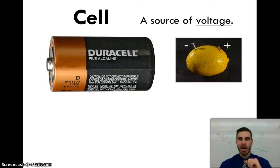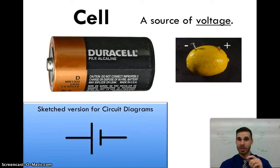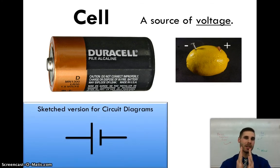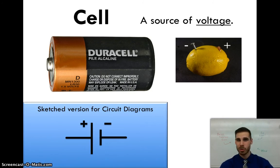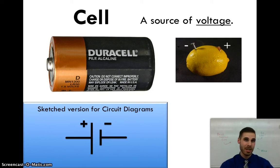How are we going to draw a cell in our circuit diagrams? It's going to look like a line that is interrupted by a space, and the space has two lines — one longer and one shorter. The longer line represents the positive terminal, and the shorter line represents the negative terminal. Just as a side note, electrons come out of the negative side of the terminal.